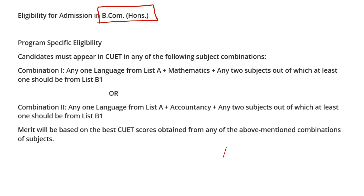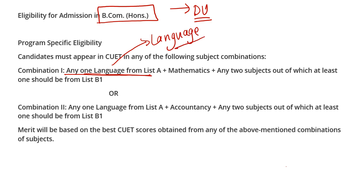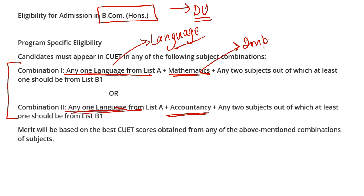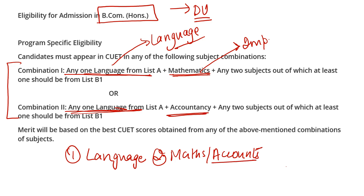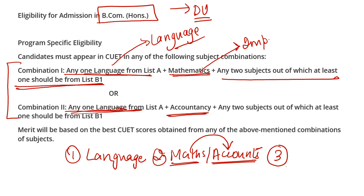Let's talk about B.com Honors eligibility — I am talking about Delhi University specifically. For B.com Honors, you must give one language from List A. Then you must give either Mathematics or Accountancy — commerce background students normally have accounts. If you have both maths and accounts, you choose one. Then you choose any two subjects, with at least one from List B1.